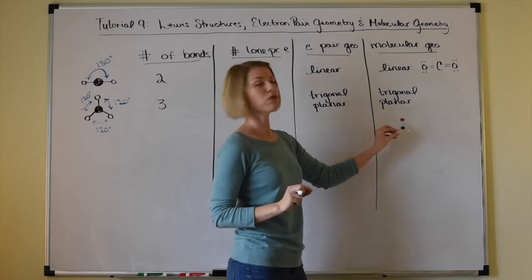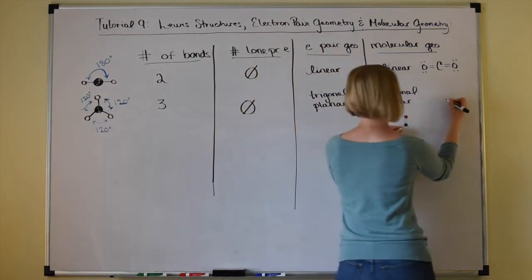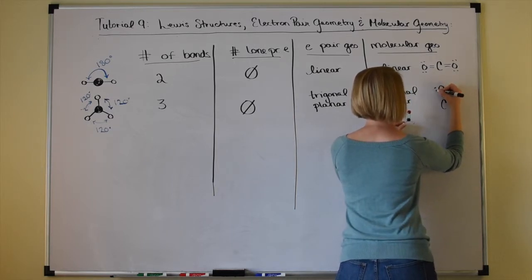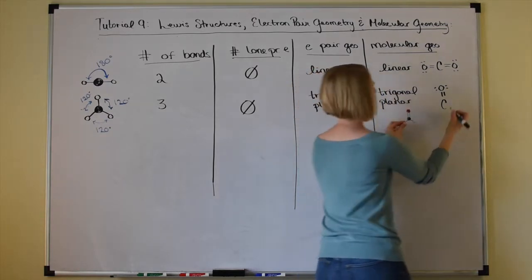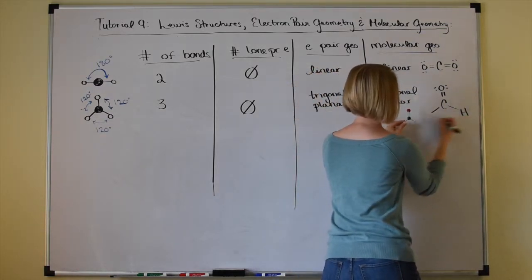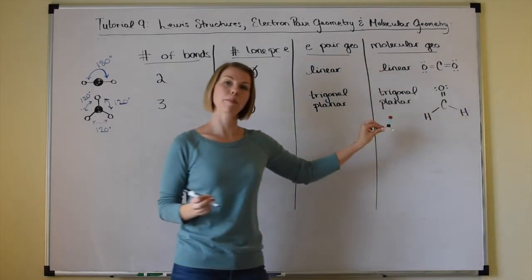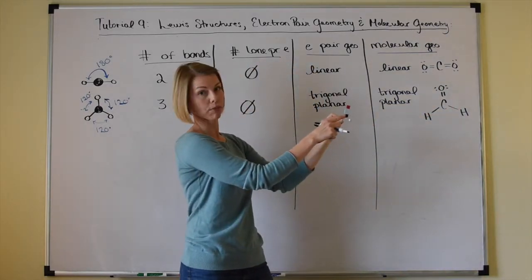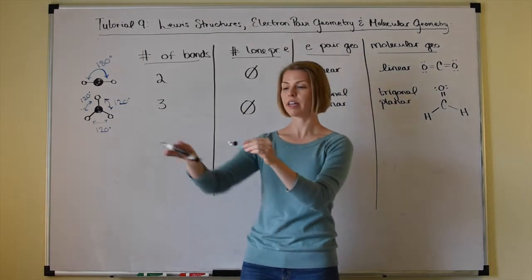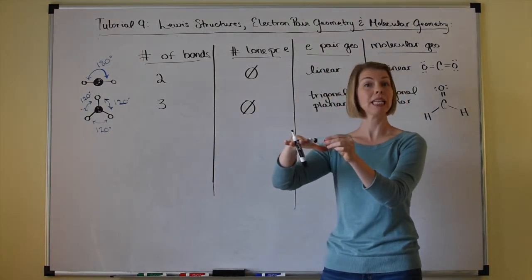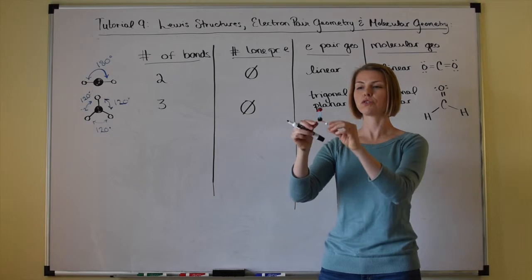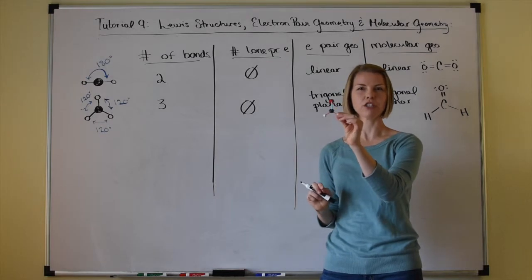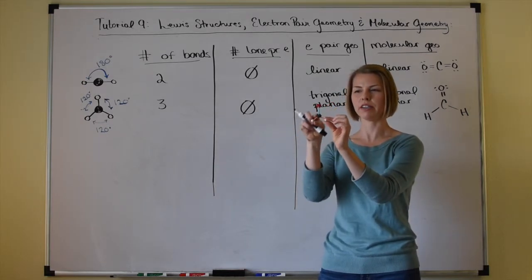Formaldehyde is a great example of trigonal planar geometry. Carbon is bound to oxygen by a double bond, and then two single bonds to two hydrogen atoms. With respect to the carbon, all four atoms are in the same plane, and it has a little triangular shape with 120-degree angles — 120, 120, and 120.